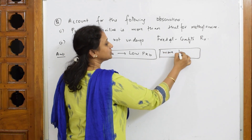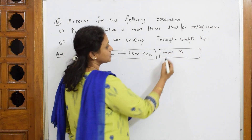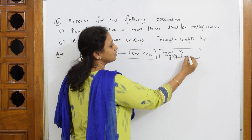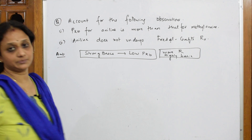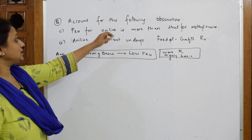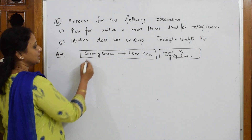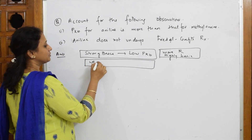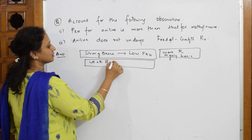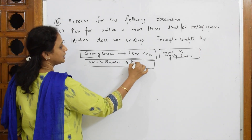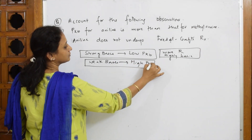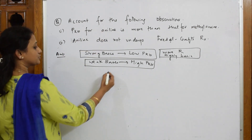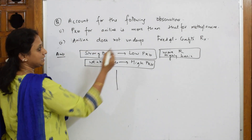More alkyl groups — R is alkyl groups — they are highly basic. You should remember this. Now, pKb for aniline is more, which means aniline is a weaker base. In other words, weak bases have high pKb. Let's compare aniline and methylamine.